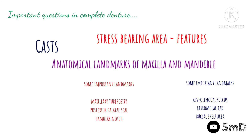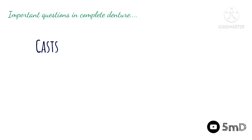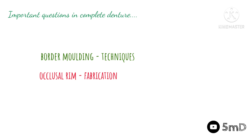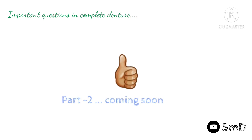As far as secondary impression is concerned, we need to know about the special tray or custom tray — how to fabricate it. Border molding, which is a prior step to secondary impression making, is also important — we need to know the techniques involved. Following that, we need to know about occlusal rim fabrication, which is an important five-mark question. In the next video we'll see the important topics starting from recording jaw relation — stay tuned.